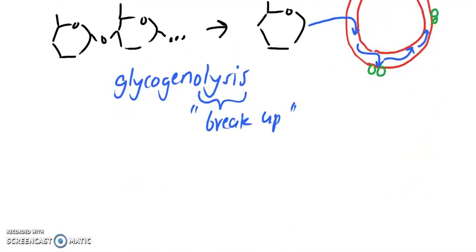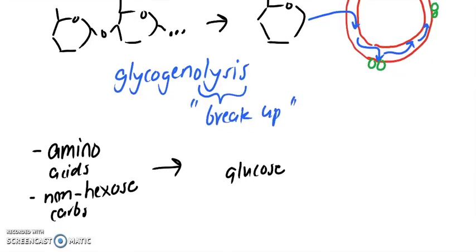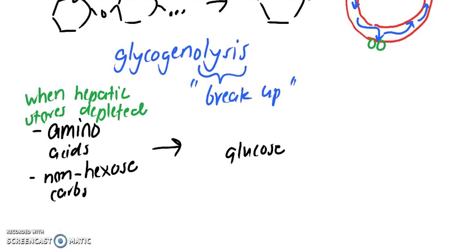Your body, the liver, can also take other sources to create glucose. We can take amino acids and non-hexose carbs. We can use this to create glucose when the hepatic stores are depleted. Hepatic just refers to liver. We can create glucose from these two. This process of creating glucose like this, we call gluconeogenesis.